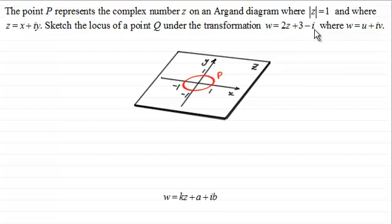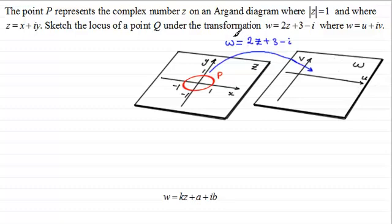So you can see that this transformation here takes on this particular form. So what is the locus of this point Q going to be in the w plane when we do this transformation here, w equals 2z plus 3 minus i?